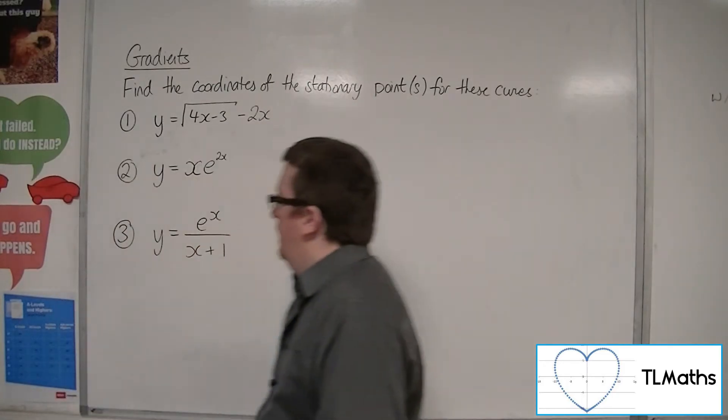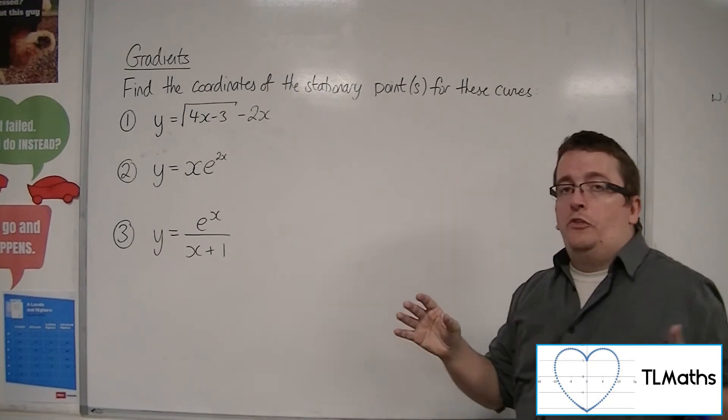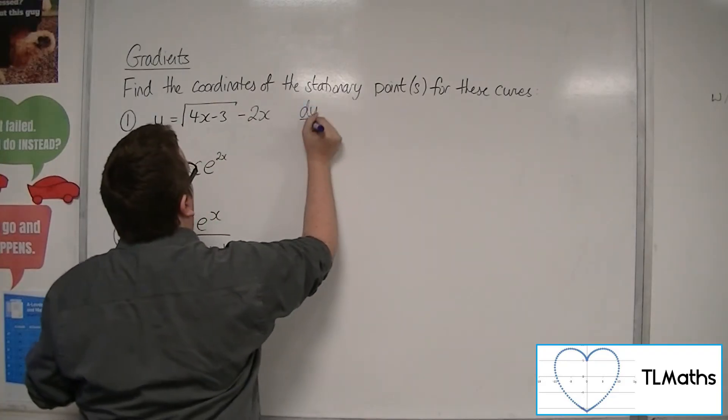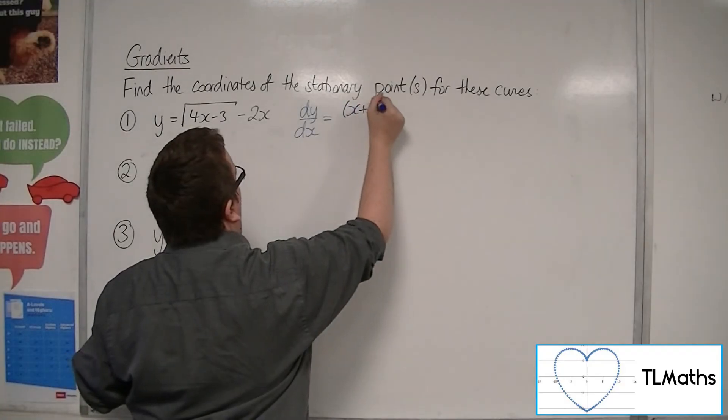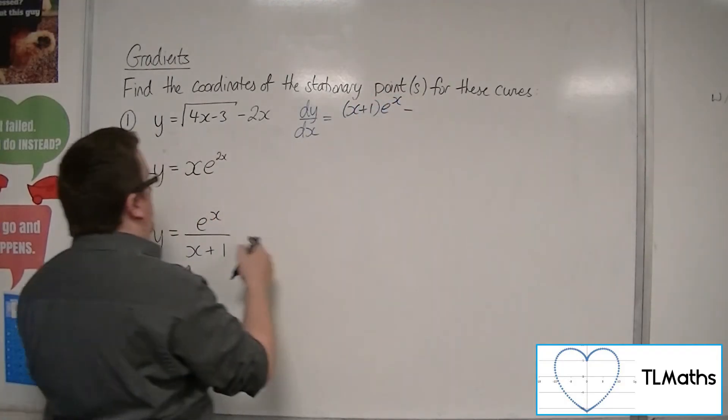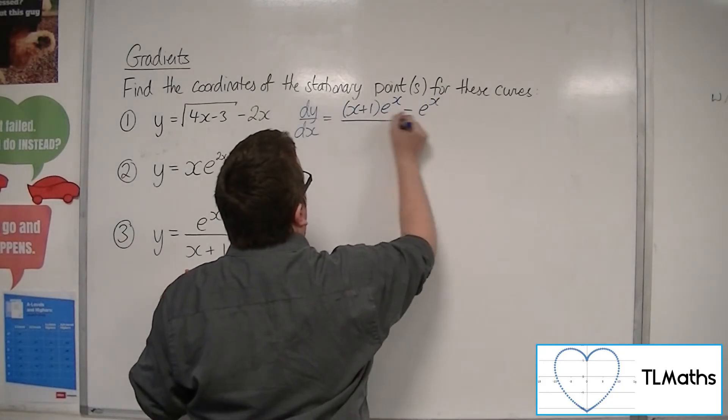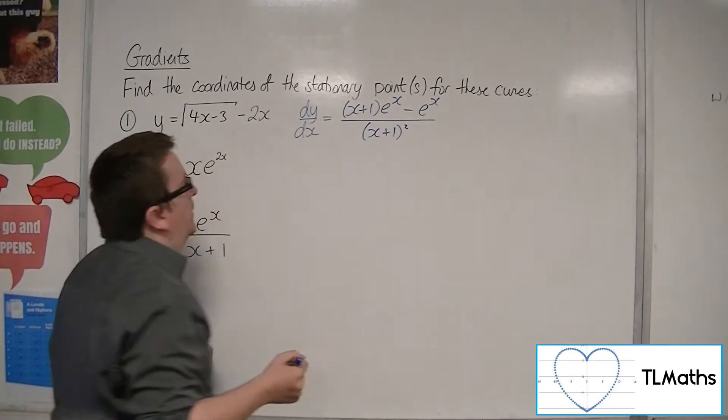Last one, number 3. We have y = e^x/(x + 1). So I'm going to use the quotient rule to differentiate that. So we've got the bottom times the derivative of the top, take away the top times the derivative of the bottom, so just e^x, all over the bottom squared.